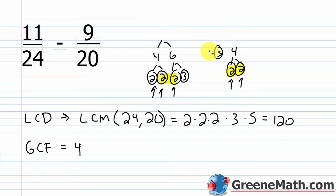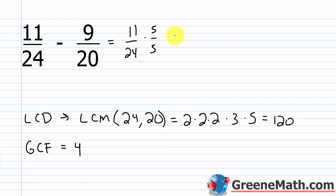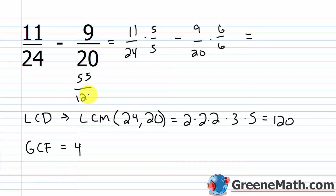Let's go ahead and execute this problem. We know the LCD is 120, so let's transform each fraction. We have 11 over 24 multiplied by 5 over 5, minus 9 over 20 multiplied by 6 over 6. That gives us 55 over 120 minus 54 over 120, which equals 1 over 120 as my answer. And I can't simplify that any further.